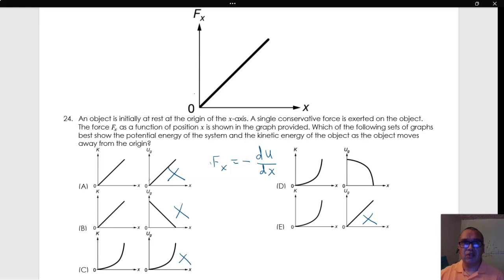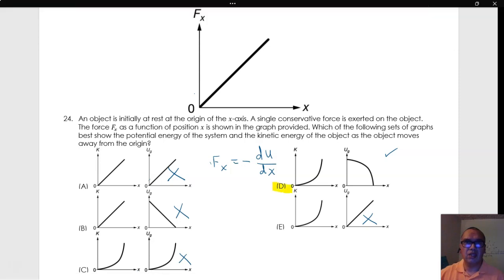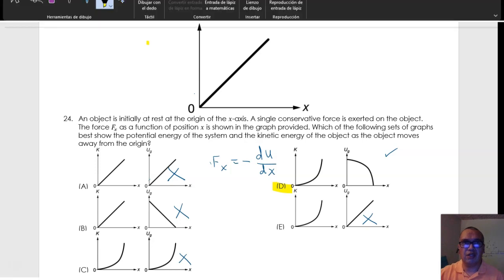The only possibility then is option D, where the slope starts at zero and becomes increasingly negative. Notice that this means that the kinetic energy starts at zero, because at the origin the potential energy is maximum, and the kinetic energy increases as position increases, so that the total mechanical energy remains constant, which is proper of conservative forces.